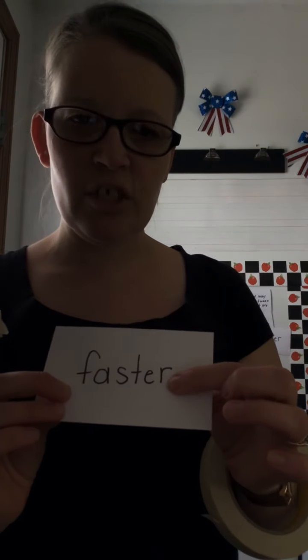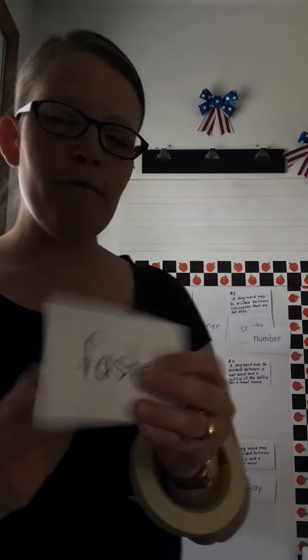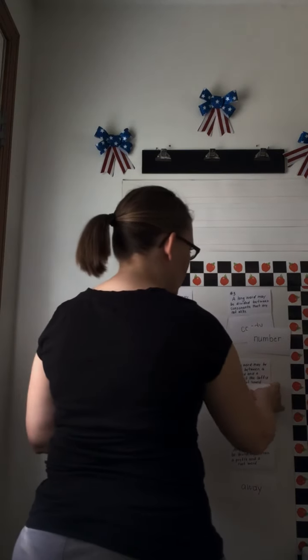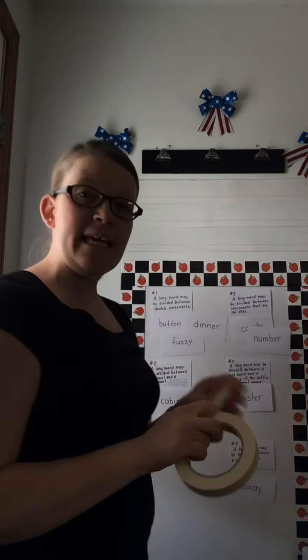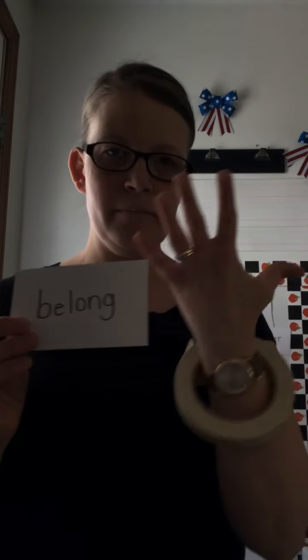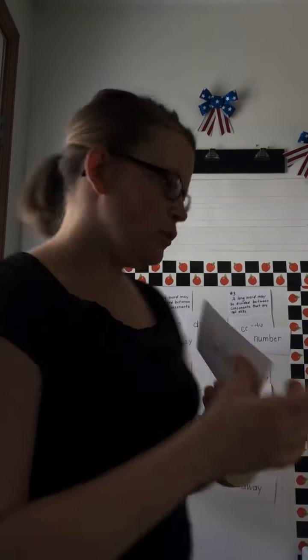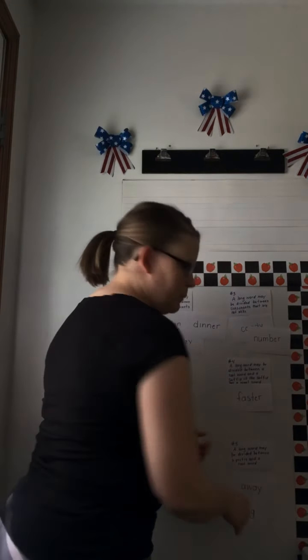Next word: 'faster.' Here you have a root word and the suffix starts with a vowel, so rule four — divide between a root word and a suffix if the suffix starts with a vowel, like 'er' in 'bigger.' Next word: 'belong.' 'Be-' is the prefix, 'long' is the root word — rule five.